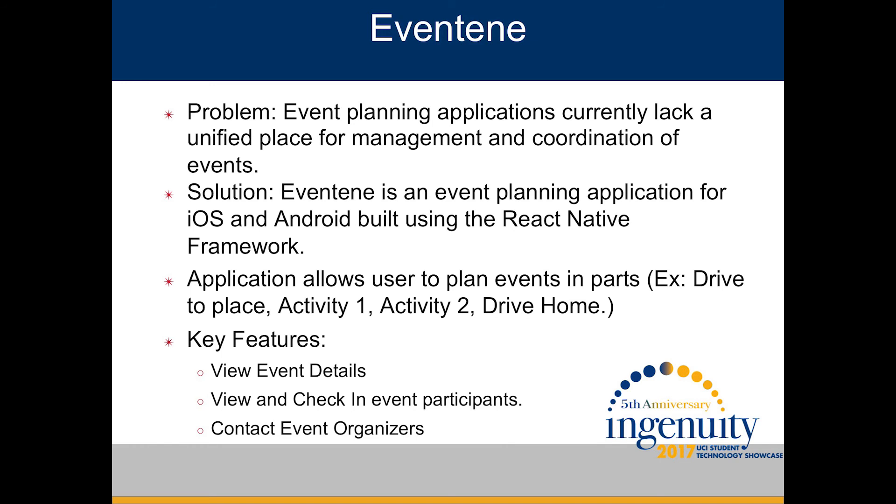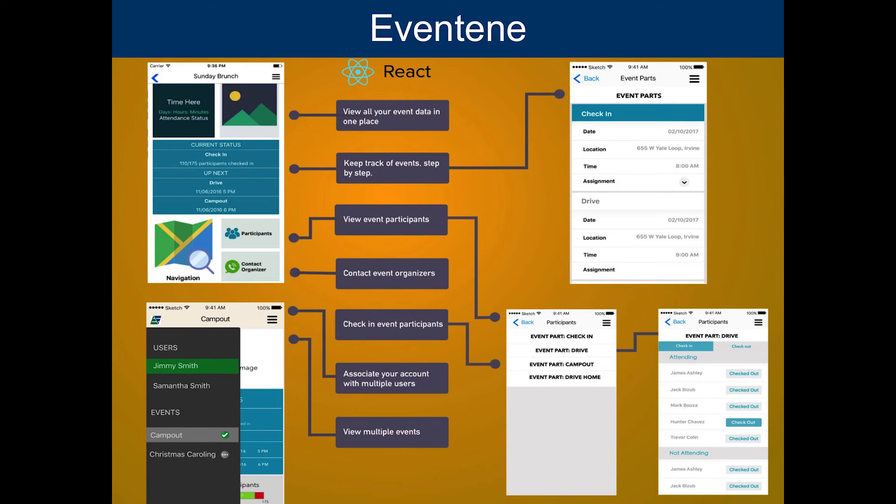There are many event applications currently in the market; however, they lack a unified place for management and coordination. Through Evantine, we allow users to thoroughly plan events by creating smaller event parts. Built with React Native and iOS and Android one-source code, our solution allows for better organization and stronger project management. Key features include viewing event details, viewing and checking in participants, and contacting event organizers. For example, Bob is a Scoutmaster of 30 Boy Scouts planning a camping event. Using the check-in section of Evantine, Bob can easily keep track of attendance. The Scoutmaster can manage his Scouts and the entire event all in one source without extra materials like attendance sheets. We invite you to come test out Evantine for yourselves. Thank you.